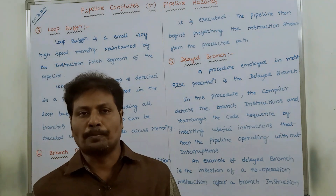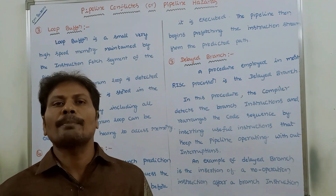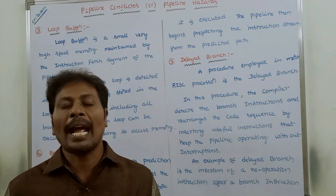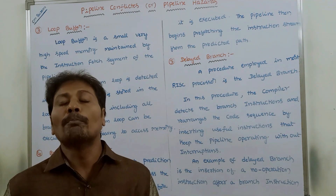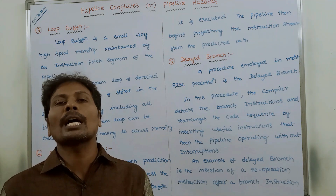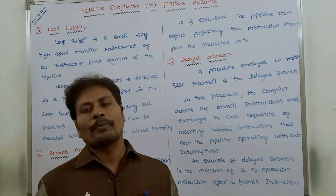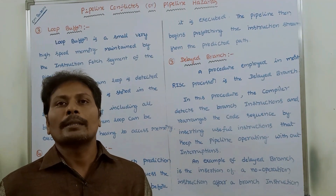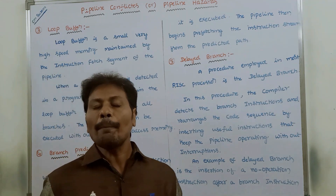The fourth mechanism is branch prediction. Branch prediction is another mechanism to handle branch instructions. A pipeline with branch prediction uses some additional logic to guess the outcome of a branch instruction before it is executed. The pipeline then pre-fetches the target instructions using some predicted path.